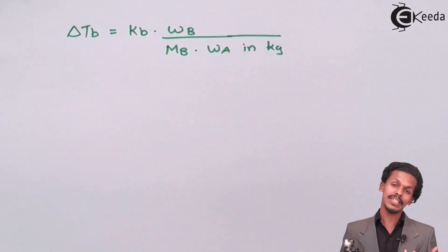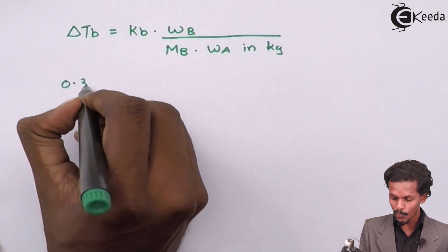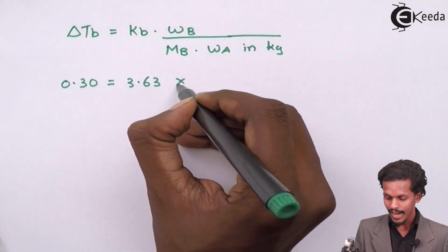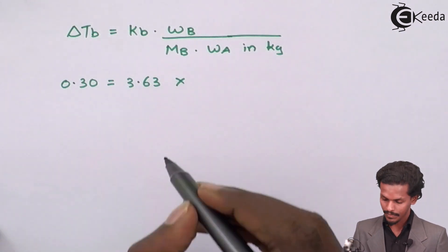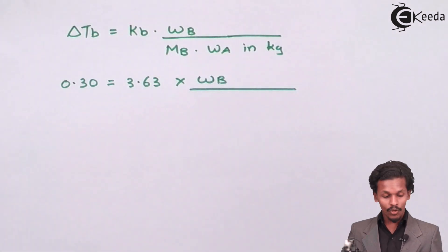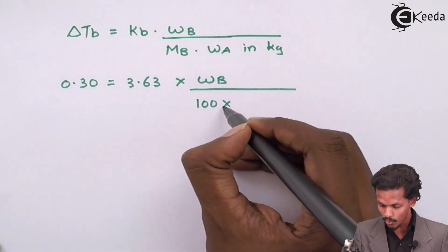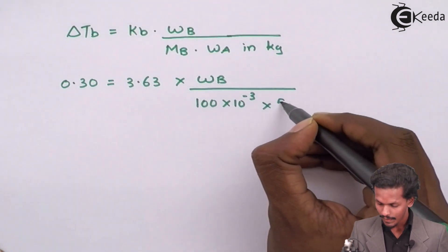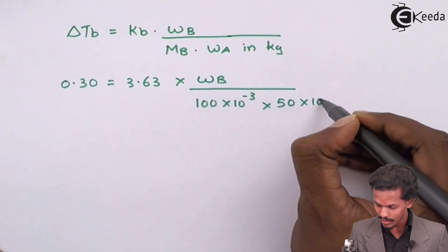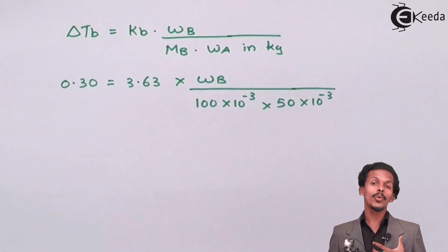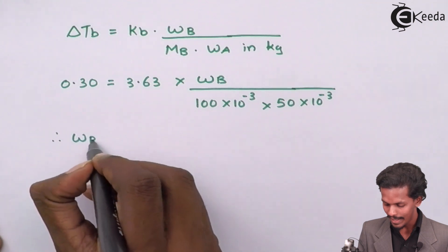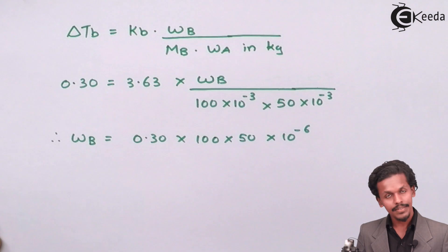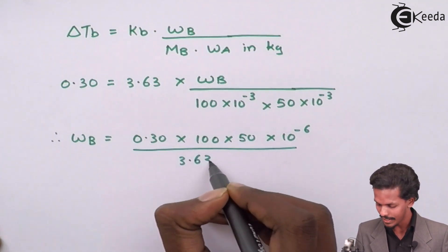So the delta Tb we have is 0.30, Kb is 3.63, and WB is the value we don't know. The value of MB is 100 into 10 raised to minus 3, and WA is 50 into 10 raised to minus 3. So by doing a calculation we could find WB as 0.30 into 100 into 50 into 10 raised to minus 6, the whole divided by 3.63. Let us see what answer we get.